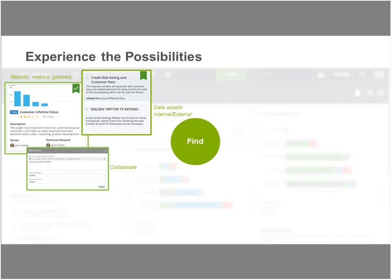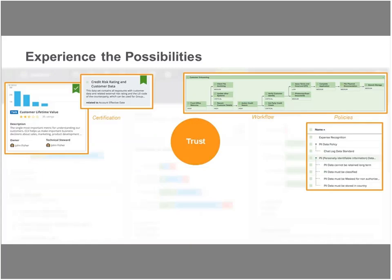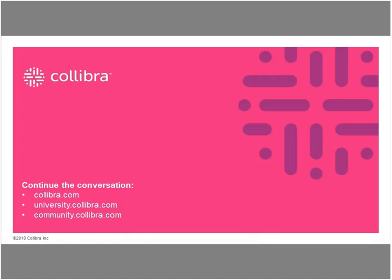In addition to offering a business glossary and dictionary for organizational alignment, we also surface reports with ratings and recommendations tools that encourage collaboration. We have features to import data quality scores linked to assets for easy usability and to improve lineage views and robust diagrams. We look to certify workflows, policies, and everything to instill trust by the end user. I encourage everyone after this webinar to join our community. With that, I'll hand it off to Shawn to kick off his presentation.